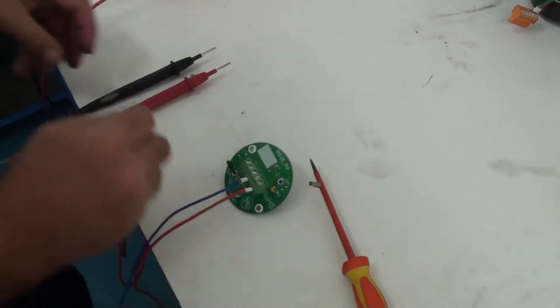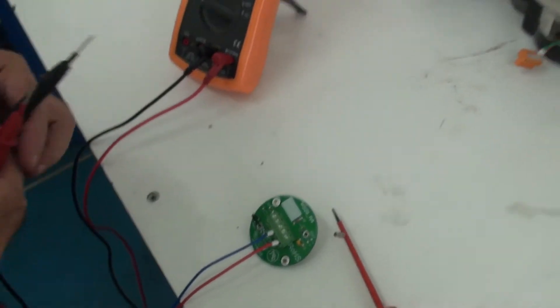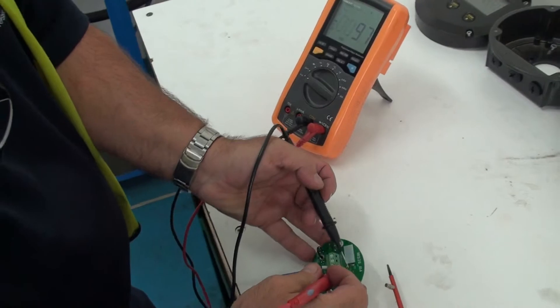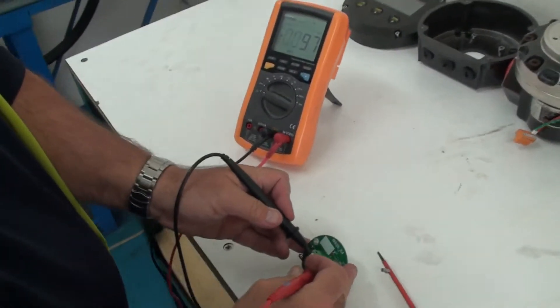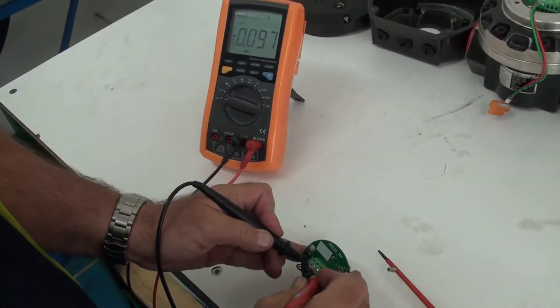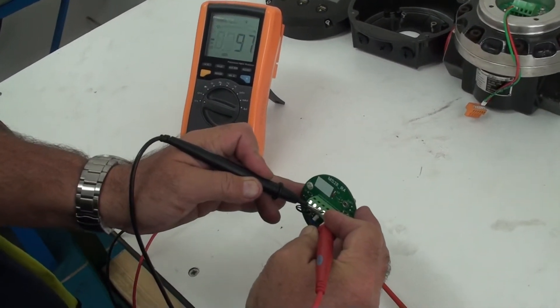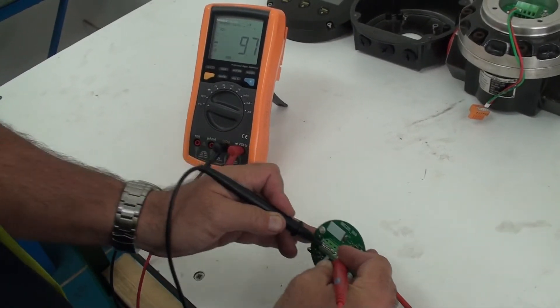Now we check this by putting our multimeter on volts. I'm going to put my red probe on pin five which is checking my voltage input and my black or the negative side of my multimeter goes on to pin four which is my voltage out. That's telling me that there's no output voltage.